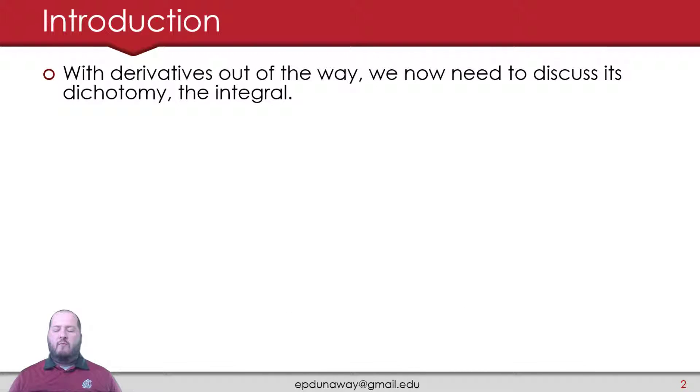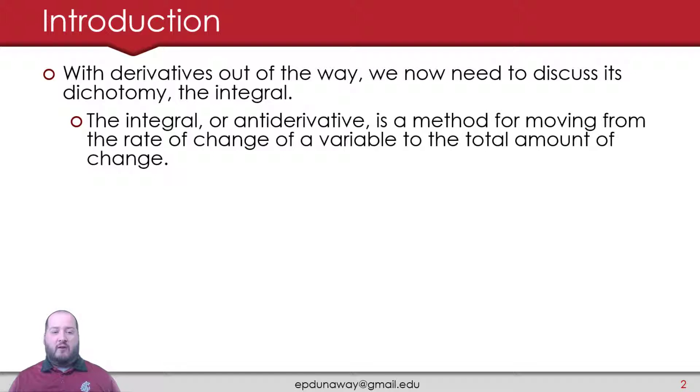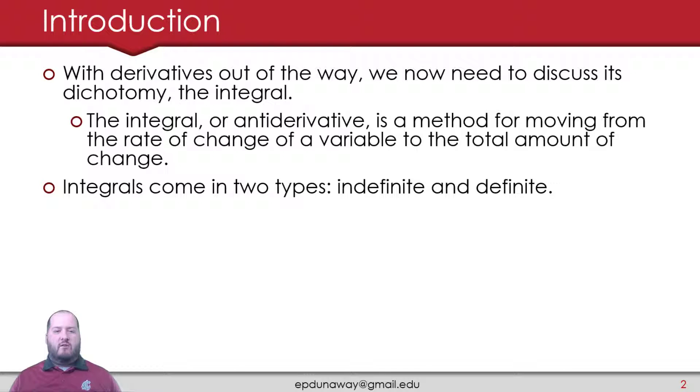Now that we're done talking about derivatives, we need to spend time talking about the dichotomy of a derivative, the integral. A dichotomy is just the opposite, going backwards. The dichotomy of addition is subtraction, multiplication is division. Our integral, or antiderivative, is a method for moving backwards from the rate of change of something to the total amount of change. It's useful when we talk about welfare effects. Integrals come in two types: indefinite and definite.